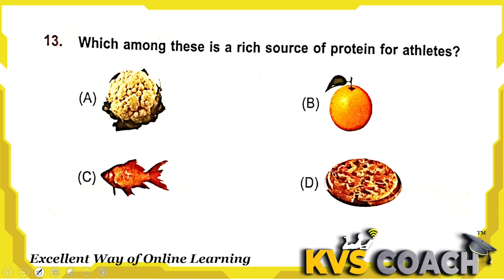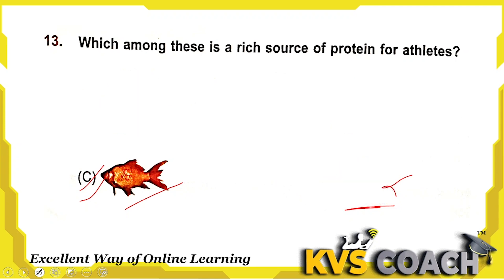Next: which among these is a rich source of protein for an athlete? Fish is the rich source of protein. Vegetables and fruits are the rich source of vitamins. Pizza is junk food and is never allowed for players. Option C is the right answer for rich source of protein.